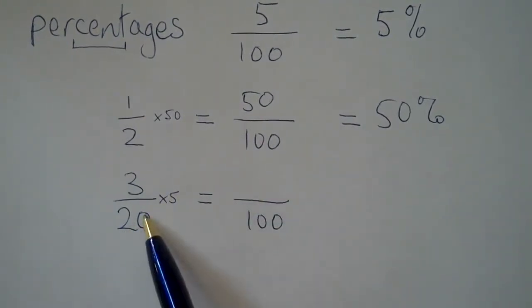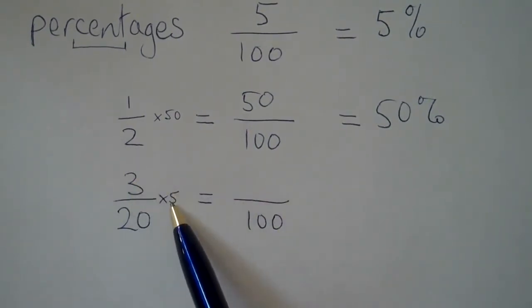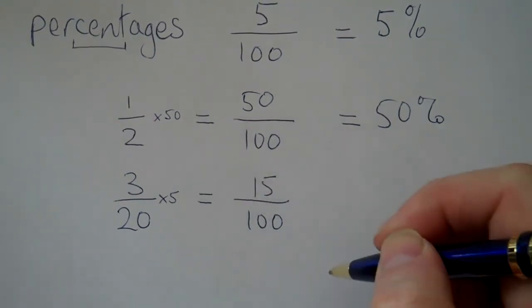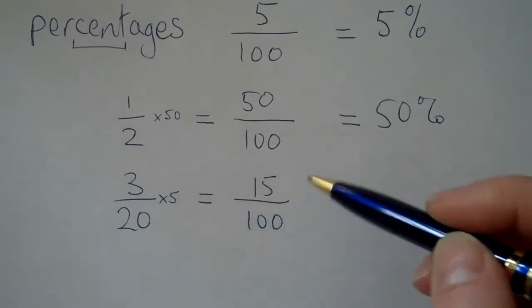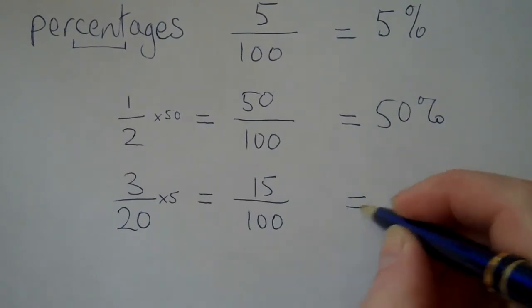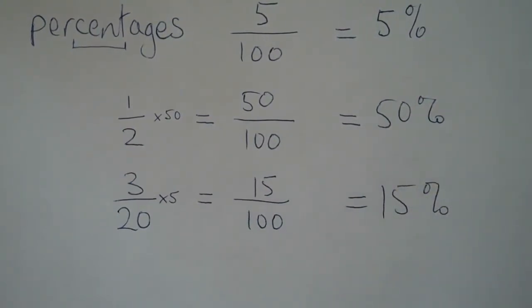What have you got to multiply twenty by to get to a hundred? You've got to multiply twenty by five. So twenty times five gives us the bottom number, a hundred. Three times five gives us fifteen for the new top number. So three out of twenty is equivalent to fifteen out of a hundred. So we could have written down that fifteen percent of people could juggle from that particular group.